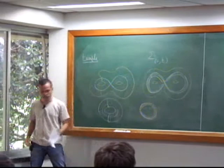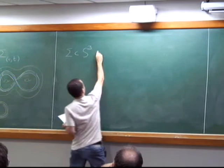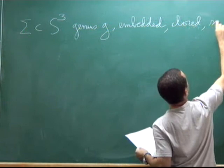So the conclusion is that there's no way of bounding the genus of the original family. It's very important that in our theory, it works for surfaces of any genus. We are dealing with a surface inside the three-sphere of genus G, embedded, closed, and smooth.